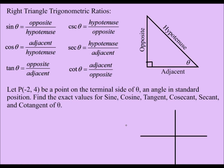Here we're going to find the exact values for six trigonometric ratios. Above we have the trigonometric ratios that we're going to use. Let P(-2, 4) be a point on the terminal side of theta, an angle in standard position. Find the exact values for sine, cosine, tangent, cosecant, secant, and cotangent of theta.